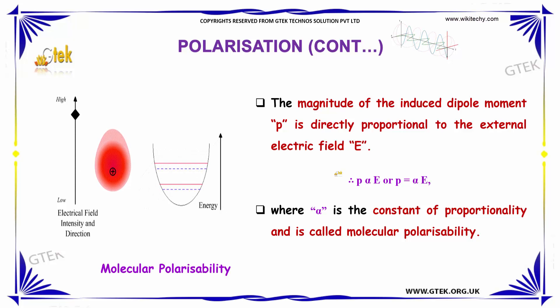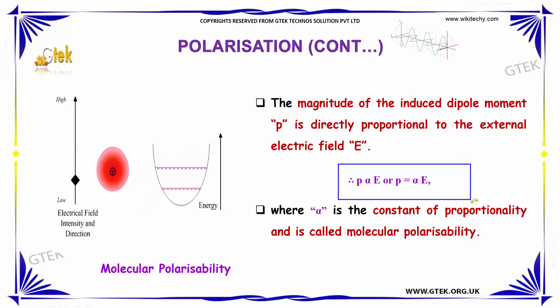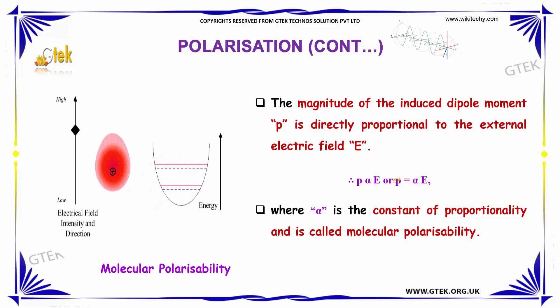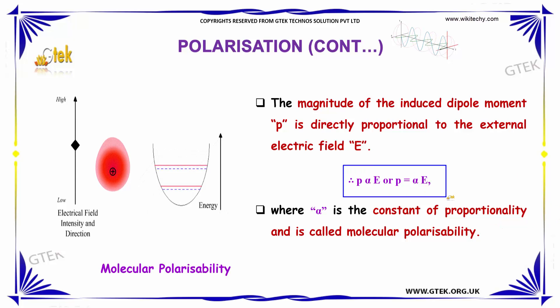The magnitude of the induced dipole moment P is directly proportional to the external electric field E, written as P ∝ E, or P = αE, where α is the constant of proportionality called molecular polarizability.